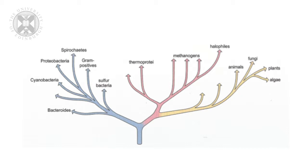This is an example of a tree of life, and you can see it's made up of many groups of organisms — in fact three groups, or domains, of organisms. On the left you can see bacteria, such as cyanobacteria, which are photosynthetic and produce oxygen. On the far right-hand side, the tree of life includes animals, which includes of course ourselves, as well as fungi and plants.